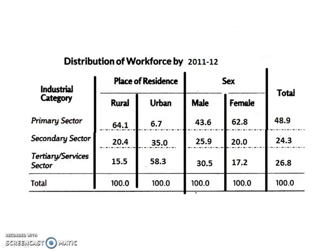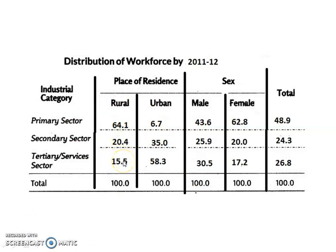Let us analyze a table. This table shows the distribution of workers by three sectors in India during 2011-12, by region and gender. From this table, we can understand that the primary sector is the main source of employment for the majority of workers in India — 48.9%. The secondary sector provides employment to about 24.3% and the service sector provides 26.8% of employment opportunities. In rural areas, 64% of the workforce depends on the primary sector, 20.4% on the secondary sector, and 15.5% on the tertiary sector.